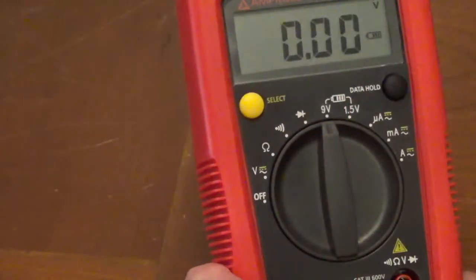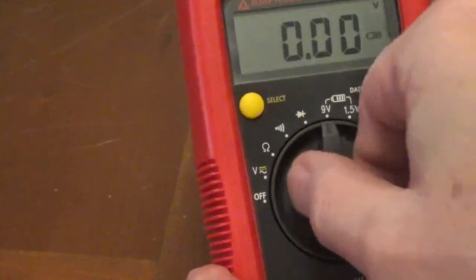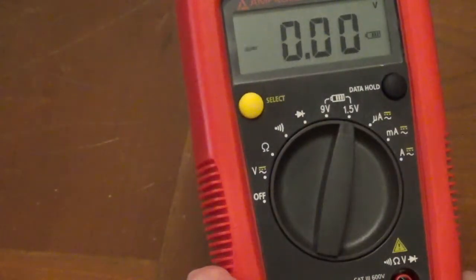9V is for testing 9V batteries. 1.5V is for testing 1.5V A, C, and D batteries.